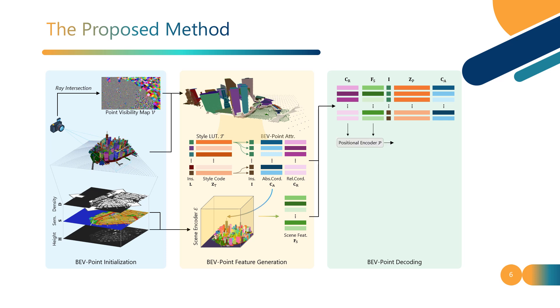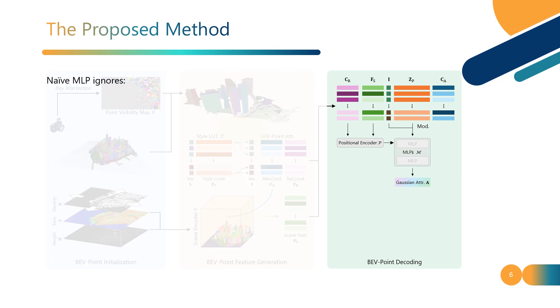These features are first processed by a positional encoder and then input into a modulated multilayer perceptron to generate the attributes of 3D Gaussians. However, the multilayer perceptron fails to capture the structural and contextual information of points.